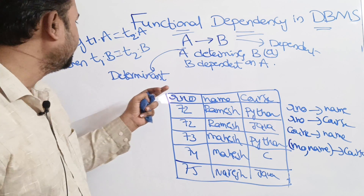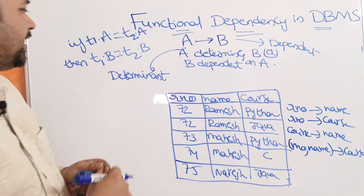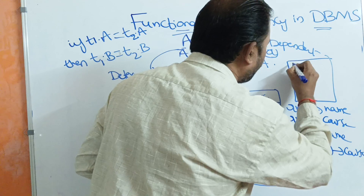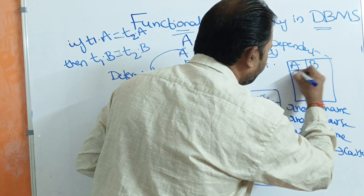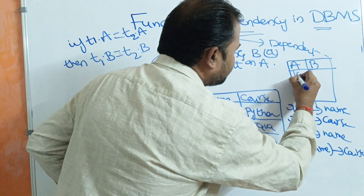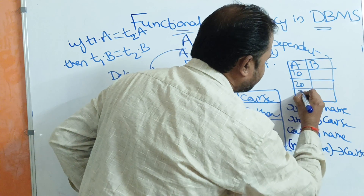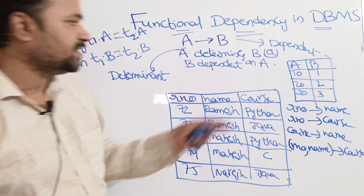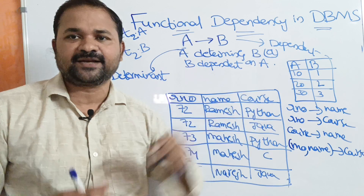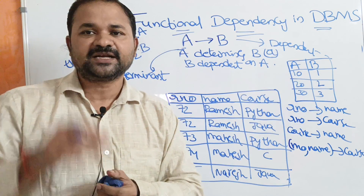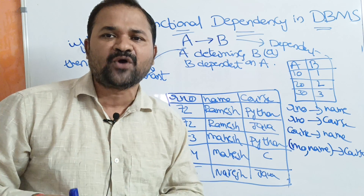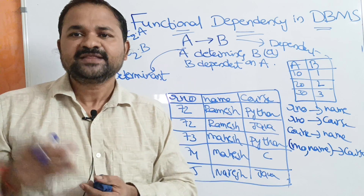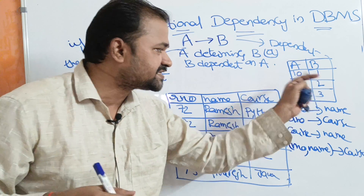Let us take an example. Suppose we have a table with only two attributes A and B. The values of A are 10, 20, 30, and the values of B are 1, 2, 3. If the value of A is 10, then we can say B is 1 — A determines B. If we know the value of A, we can determine the value of B. If A is 30, then B is 3.